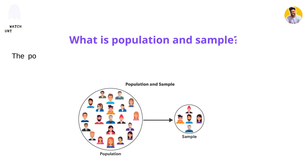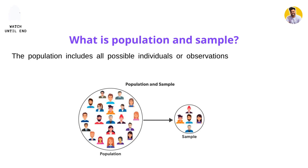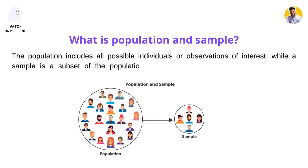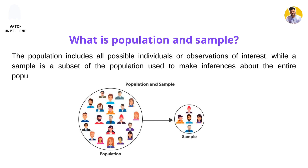Our next interview question is: what is population and sample? The population includes all possible individuals and observations of interest, while the sample is just a subset of the population. Because we make every inference and every statistical test on the sample only — you can't take the whole population and start doing statistical tests on it — that's why it is important to know what sample and population mean in statistics.